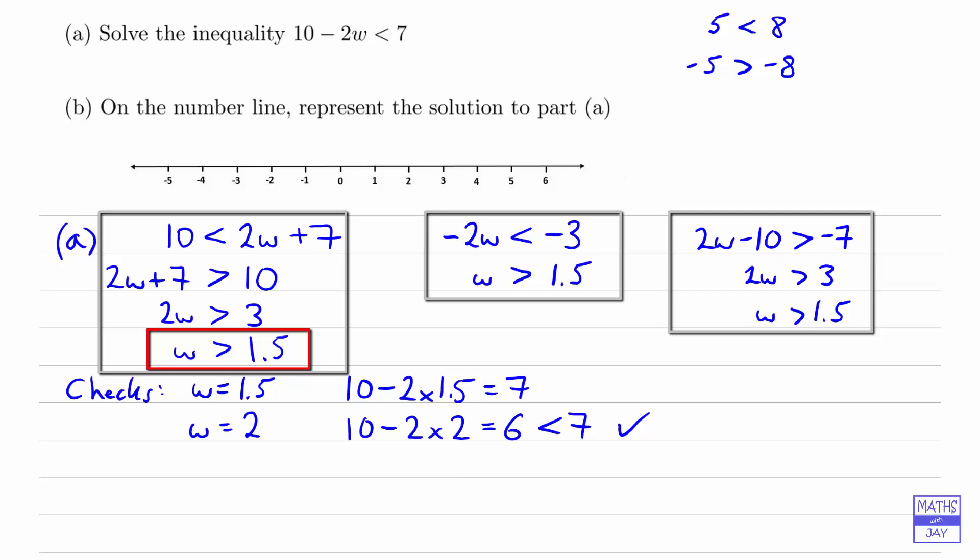And then we want to represent this answer on the number line. So if w is greater than 1.5, we want to indicate 1.5 on the number line with an empty circle because w can't actually be equal to 1.5. And then showing that it's greater than 1.5, we want to do that.